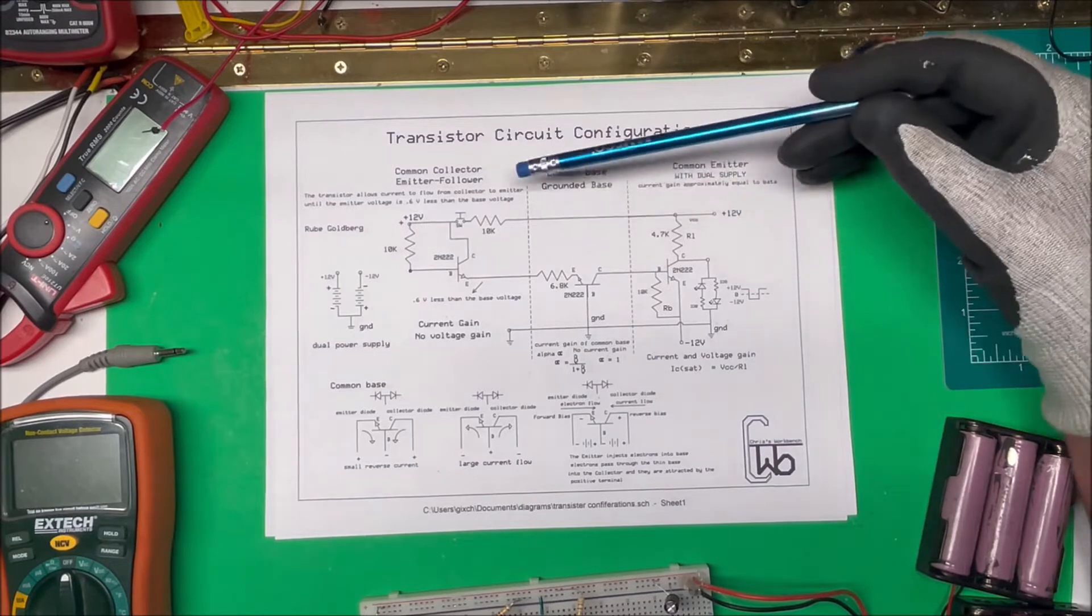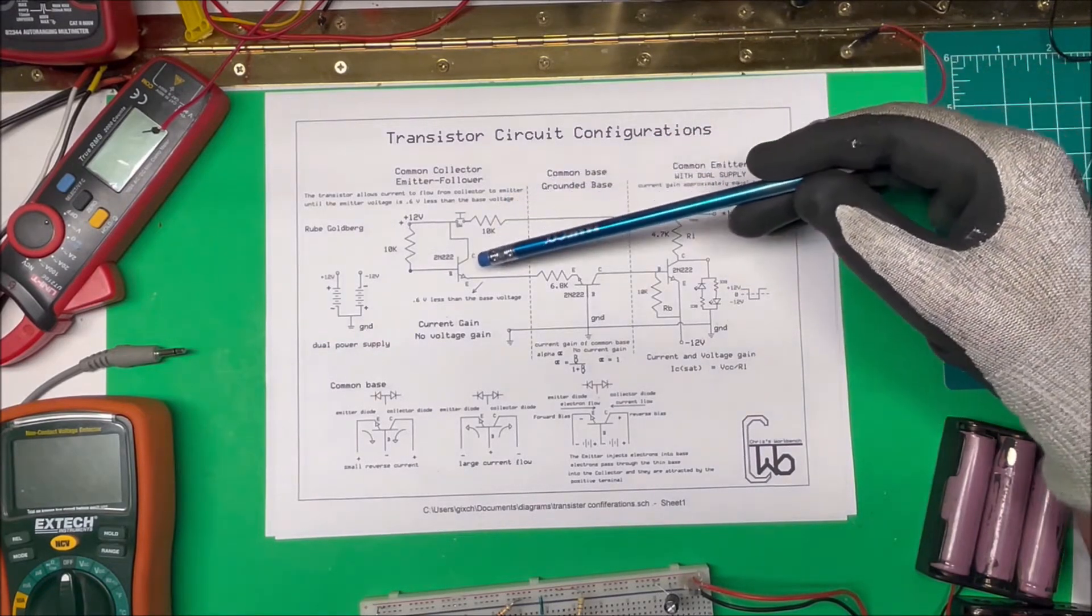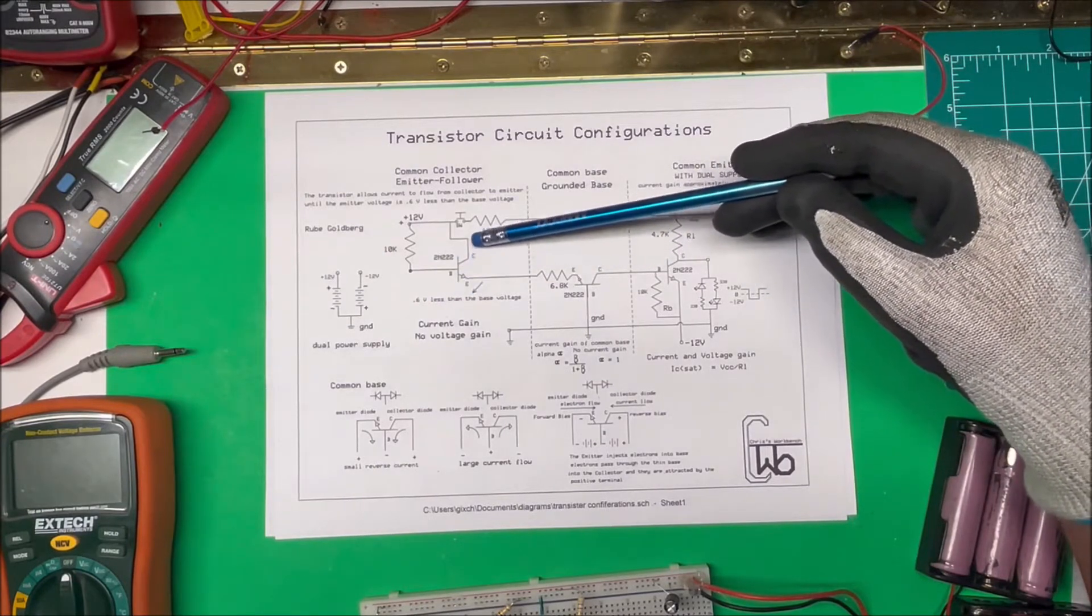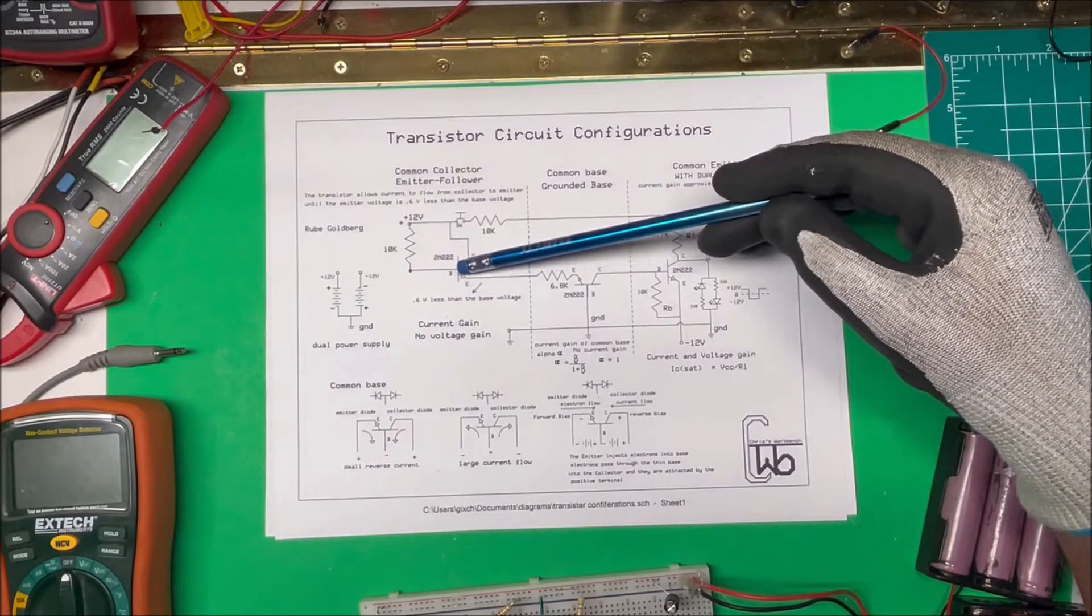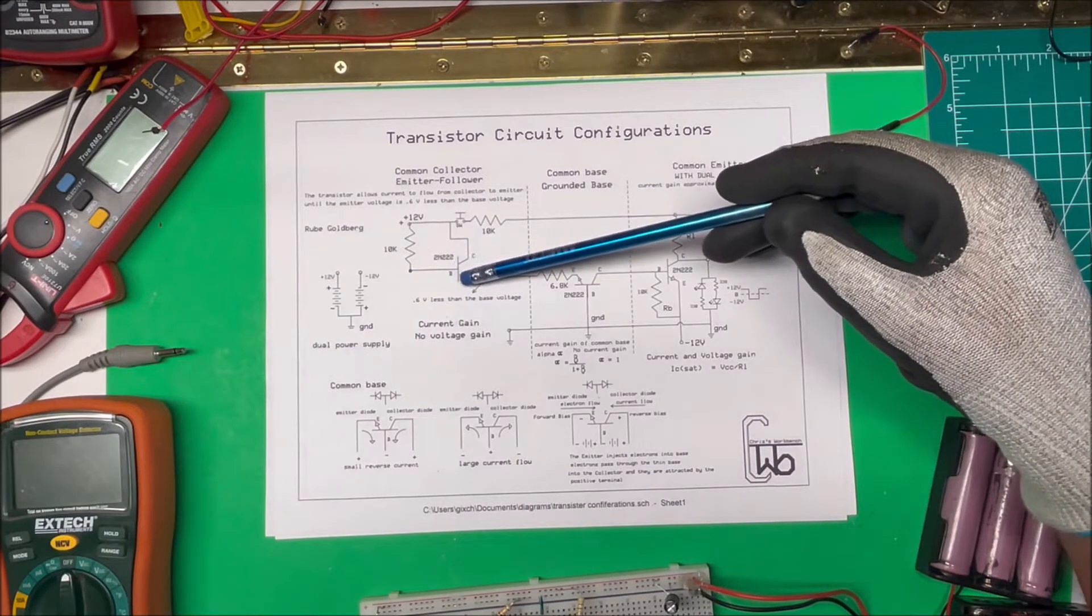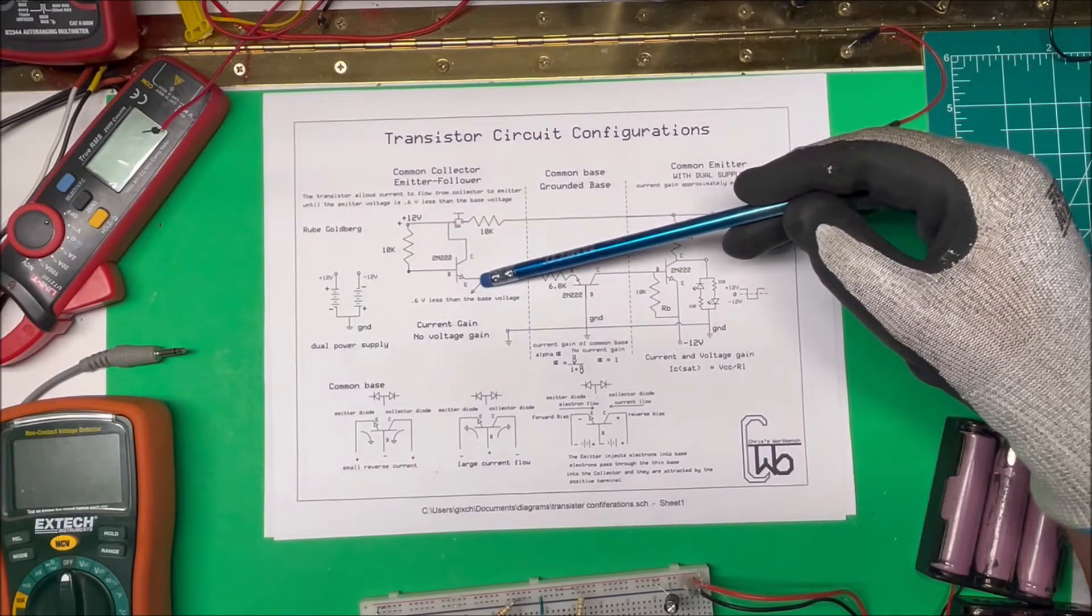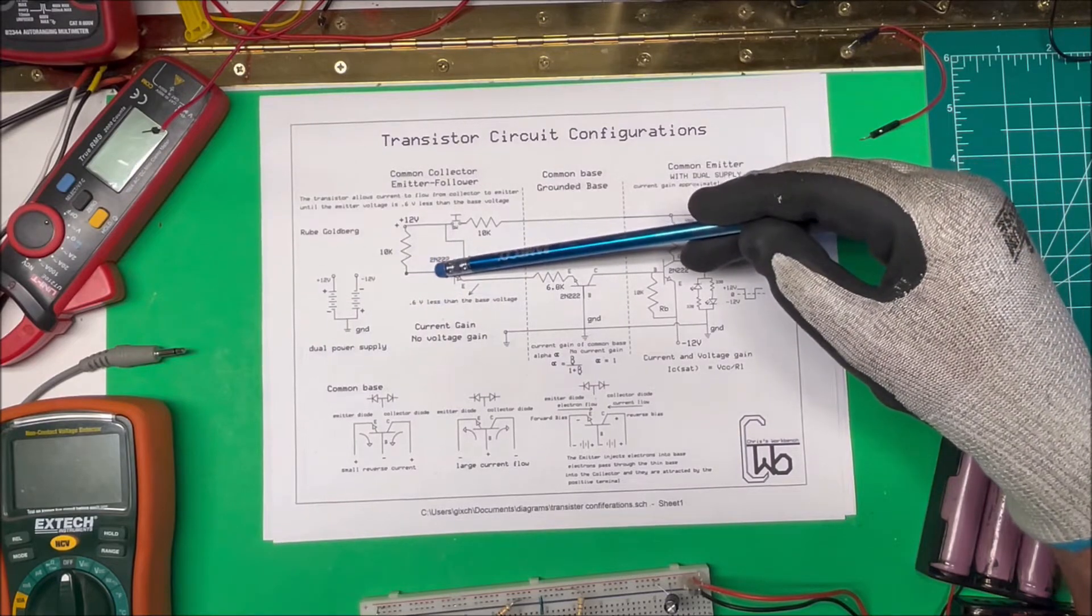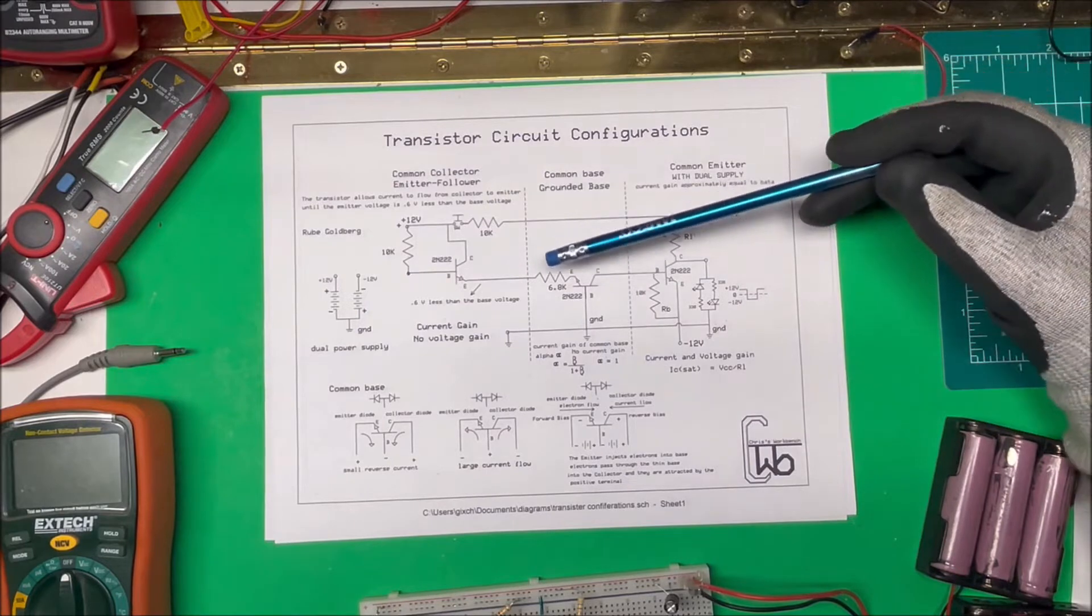I call this my Rube Goldberg circuit because it's unnecessarily complicated. I started off with this common collector or emitter follower. What this configuration does is the transistor allows current to flow from the collector to the emitter until the emitter voltage is 0.6 volts, or whatever this diode drop is, less than the base voltage. So this emitter voltage here is going to be 0.6 volts less than the base voltage here.